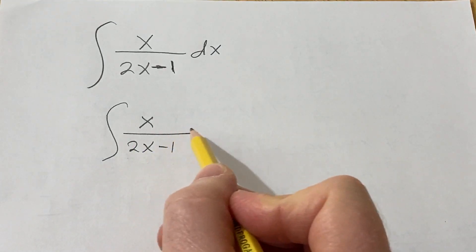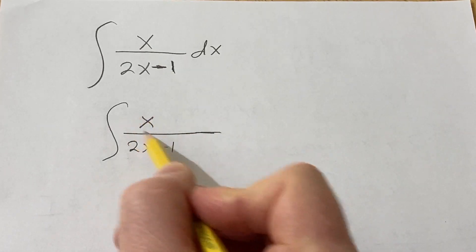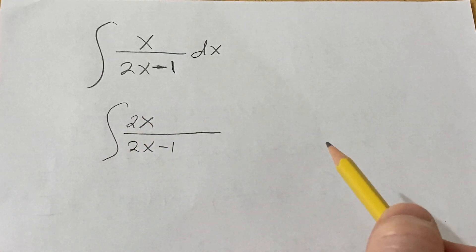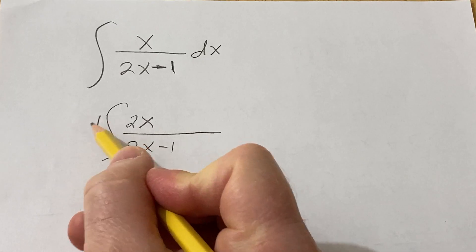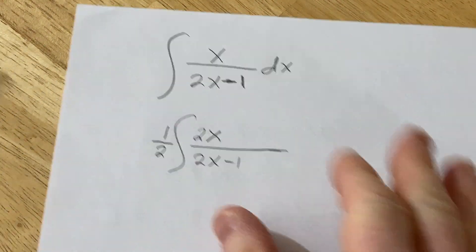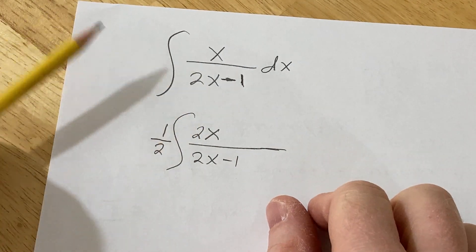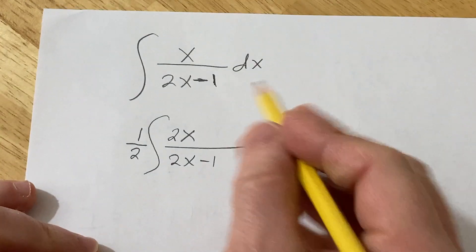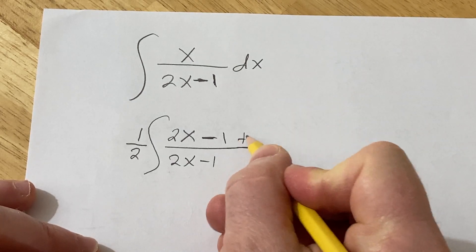So it would be really nice if we had a 2x minus 1 in the numerator so things would cancel. So what I'm going to do is put that there. So I'm going to put a 2 here, but I'm not really allowed to do that. You can't just put a 2 there, right? So what we'll do is we'll take it away. So now basically we've done nothing, right? Because look, they cancel. And now I'm just going to put that minus 1 there. But I can't do that either. So to get rid of the minus 1, I have to put a plus 1.